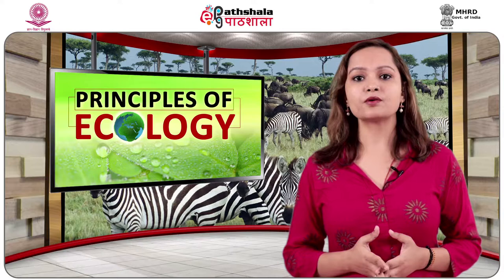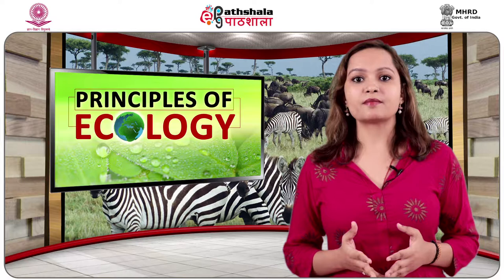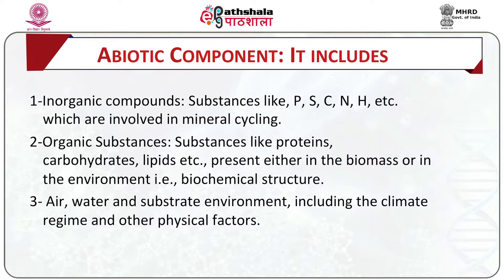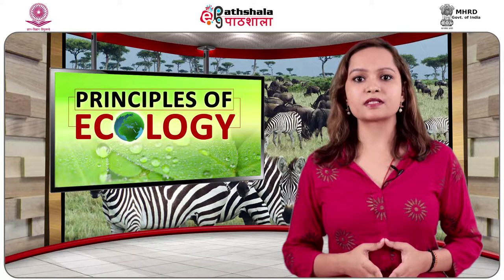Now we know about the components of the ecosystem. Living organisms and their non-living environment are inseparable and interact with each other in an ecosystem. They constitute the two major components: abiotic and biotic. Abiotic means non-living components and biotic means living components. Abiotic components include inorganic compounds like phosphorus, carbon, nitrogen, hydrogen, etc., which are involved in mineral cycling. The amount of these substances present in the ecosystem at any point of time is an indicator of its standing quality.